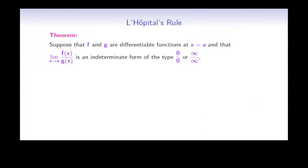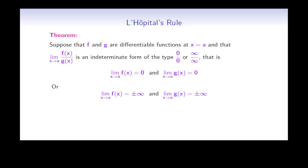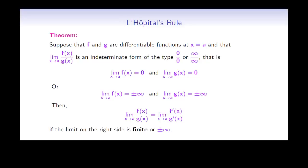Let's start by taking a look at what the rule actually says. Suppose that f and g are differentiable functions at x equals a, and that the limit of f(x) divided by g(x) as x goes to a is an indeterminate form of the type zero over zero or infinity over infinity. This means that either the limit of f(x) is equal to zero and the limit of g(x) is equal to zero, or alternatively, the limit of f(x) is plus or minus infinity and the limit of g(x) is plus or minus infinity. If either of these two cases occur, then the limit of f(x) divided by g(x) as x goes to a equals the limit of f'(x) divided by g'(x), provided that the new limit is either finite or plus or minus infinity.